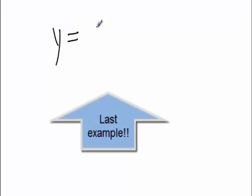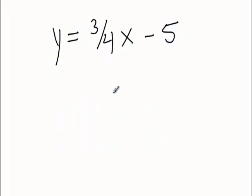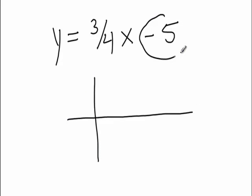y equals 3 over 4x minus 5. If you had to graph this, what would you do? OK. OK. This time, I'm going to go like this and say, OK, start with the y-intercept. 1, 2, 3, 4, 5. There's our first dot. That's the y-intercept. It's down at the negative 5.